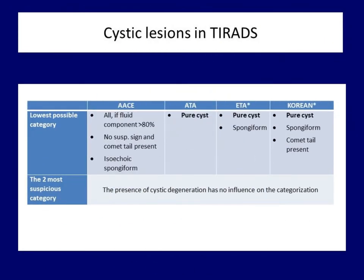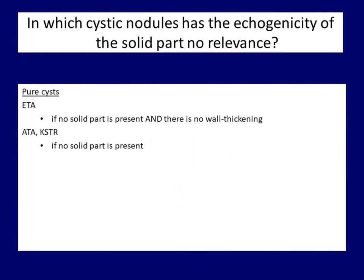In the next part, the influence of cystic lesions on thyroid categorization is discussed. The different systems include different subtypes among the benign or lowest suspicion subgroup. The common type in all classifications is the pure cyst — by definition, it does not contain any solid parts. Pure cystic lesions less than one centimeter in diameter are better considered a normal rather than pathological finding. The five societies define in three different ways those cystic lesions which do not require diagnostic cytology.